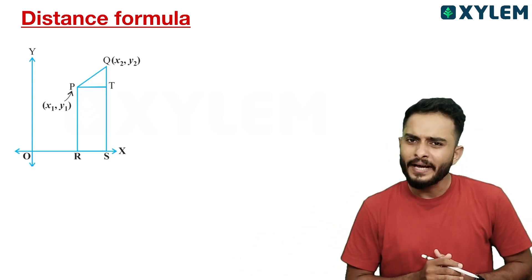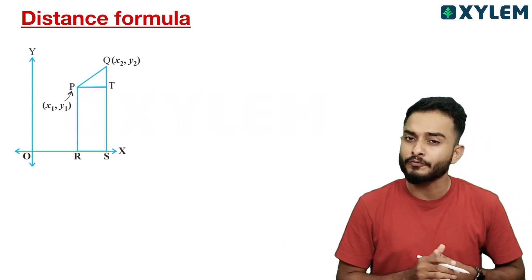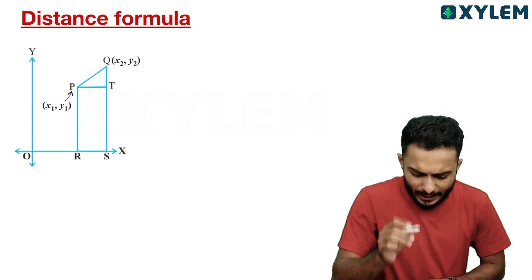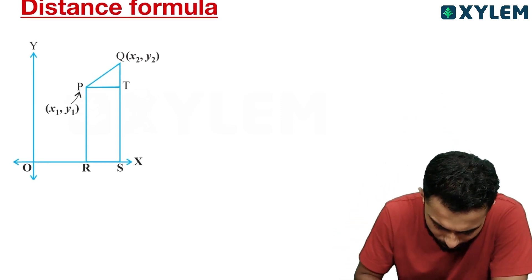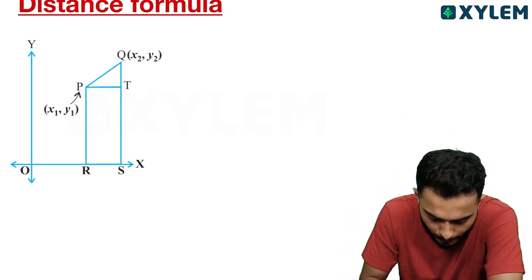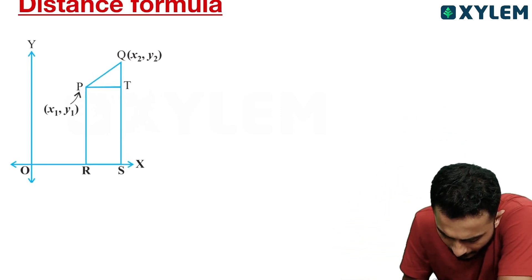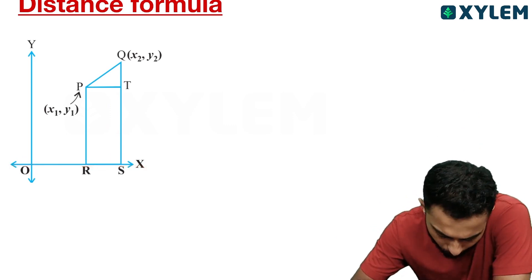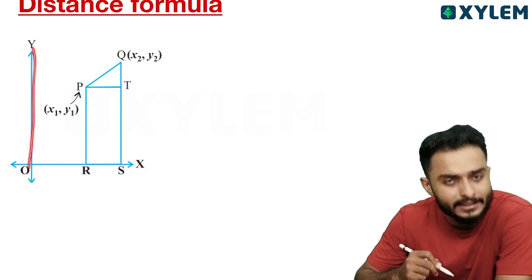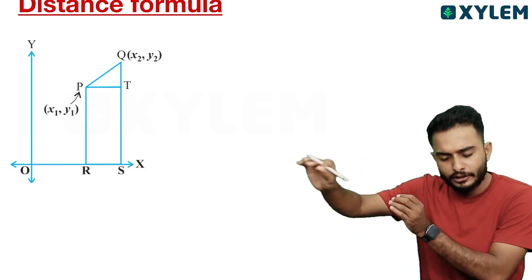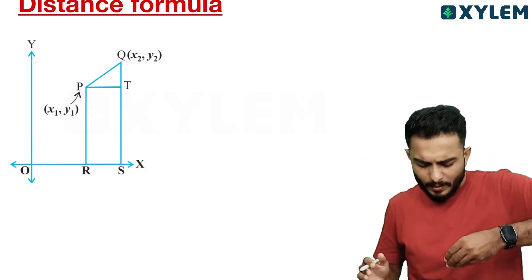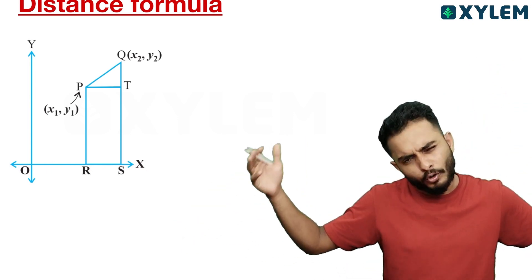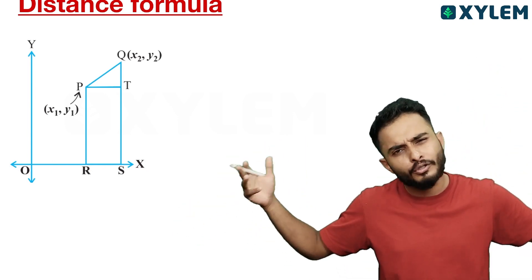We use the distance formula to find the distance between any two points. First, we find the x-axis — the positive direction of the x-axis and the positive direction of the y-axis, or any negative direction.